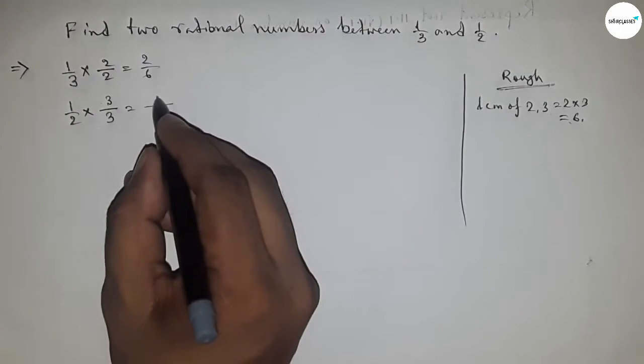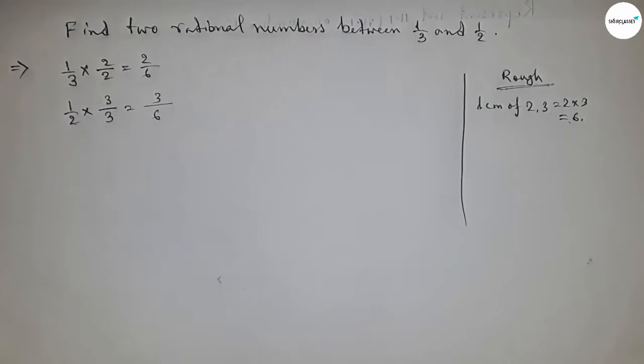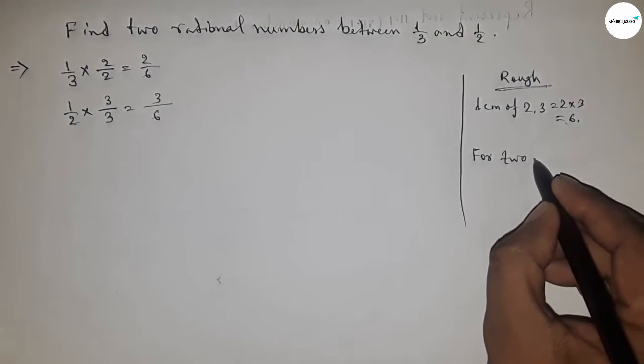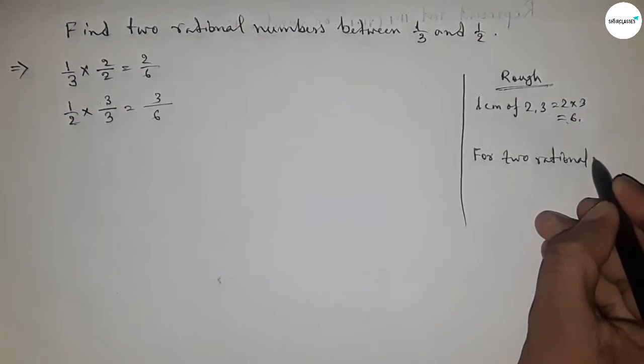here 3, so this is 3 by 6. Okay, now for two rational numbers, we have to multiply both